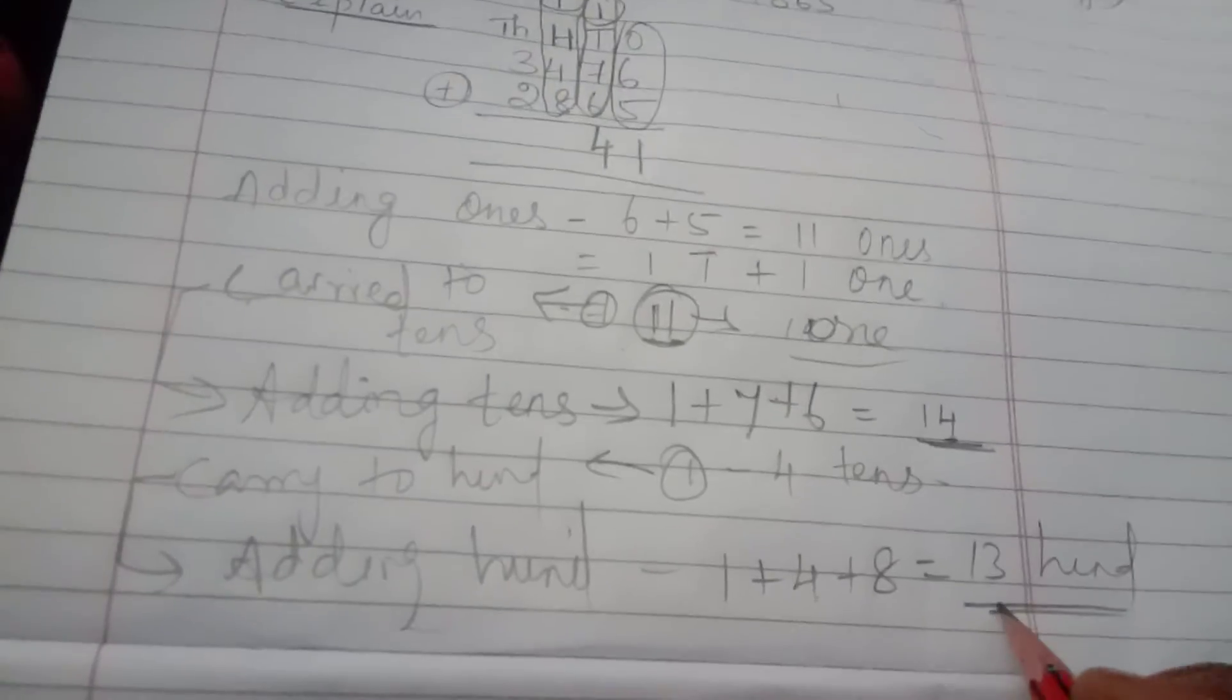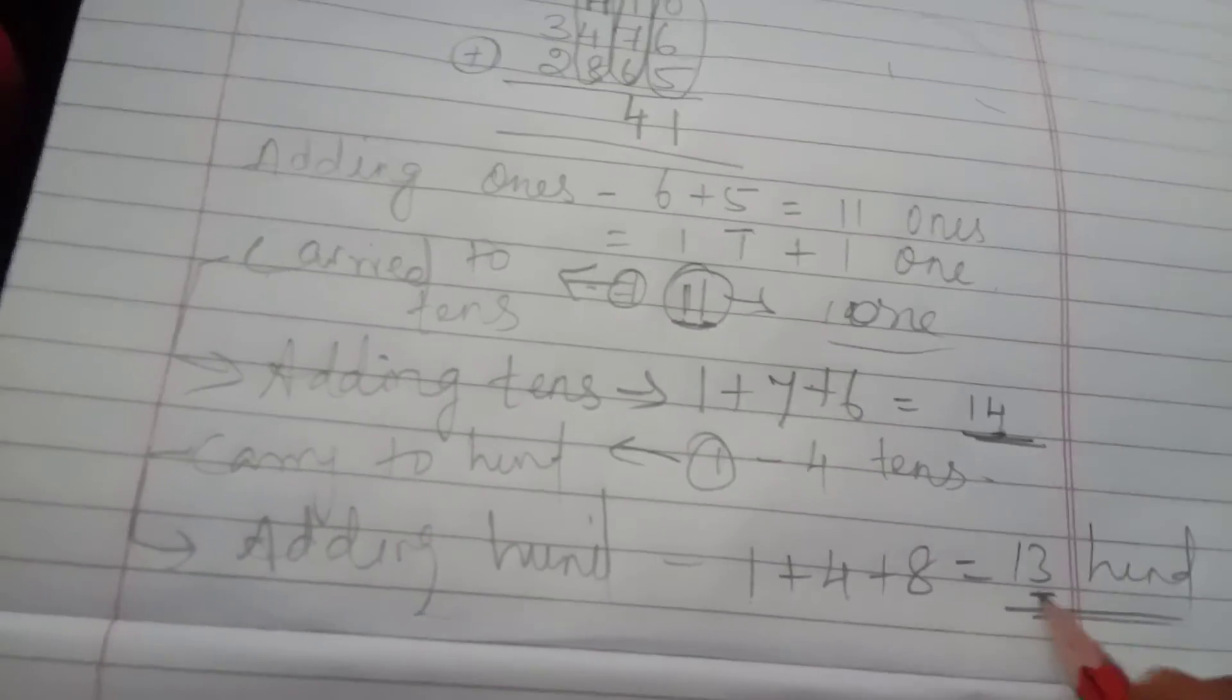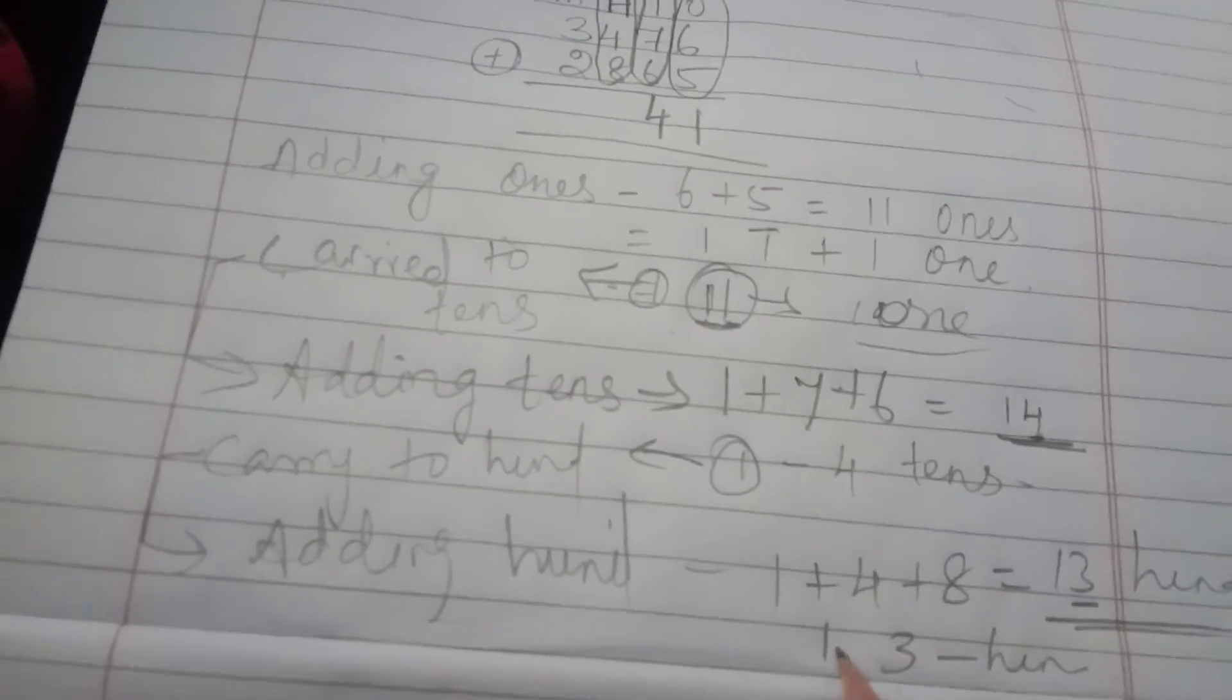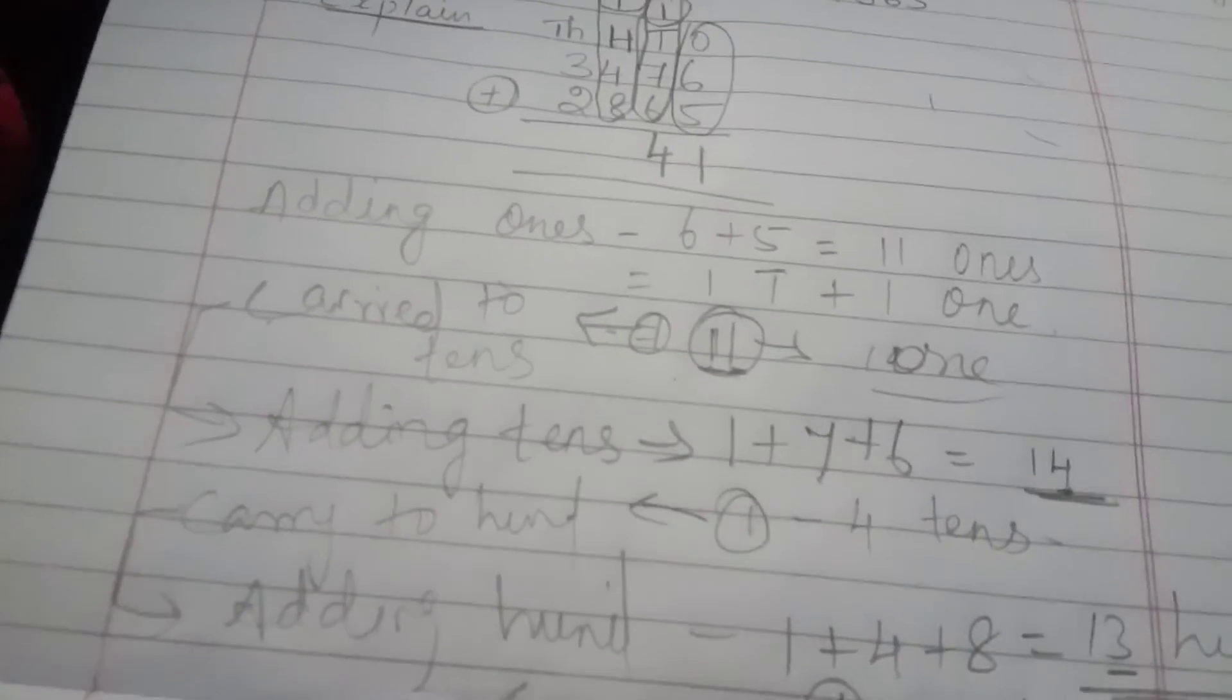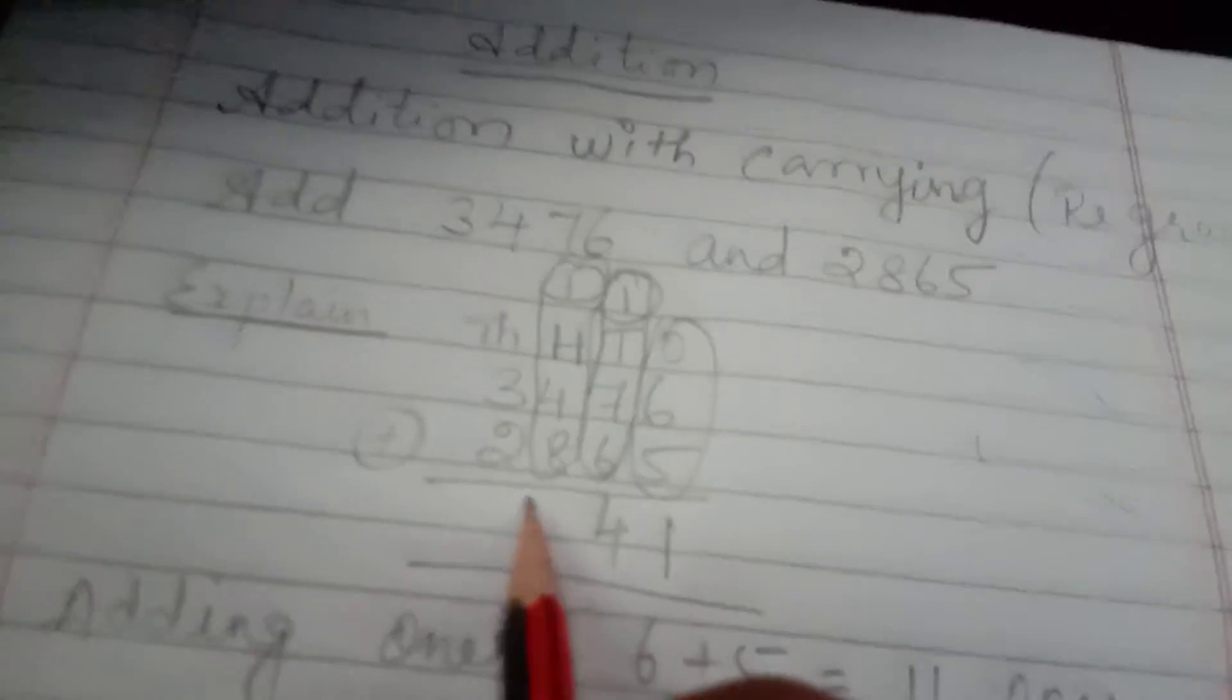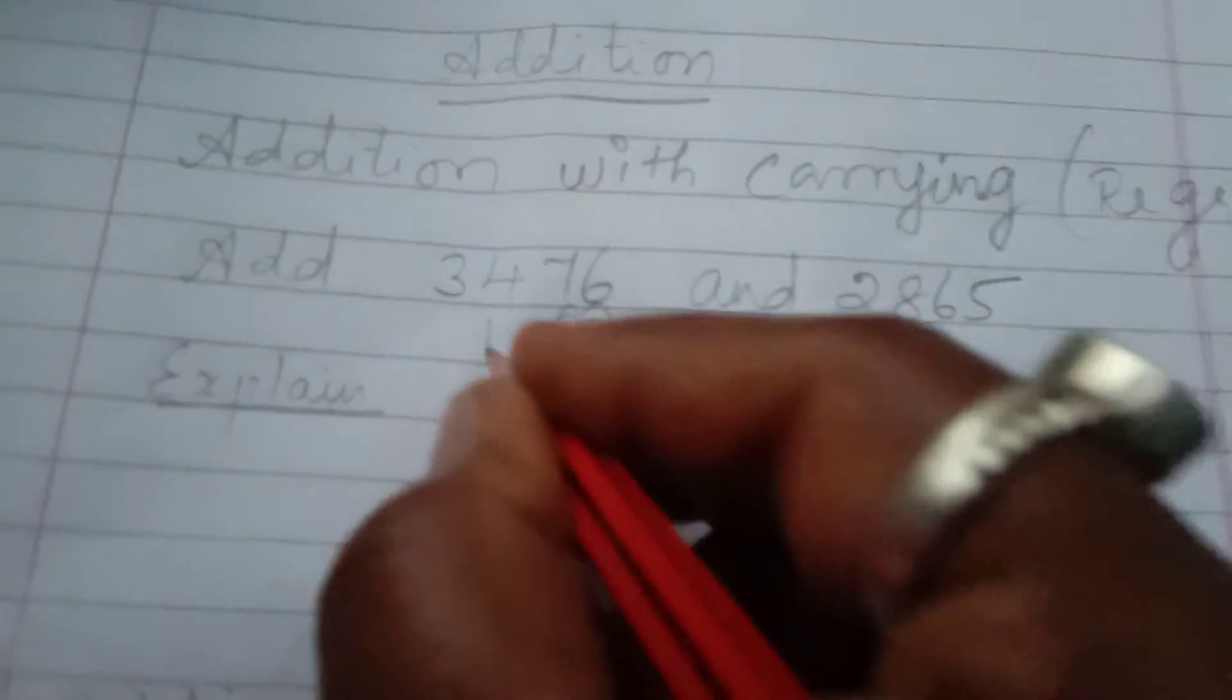13 hundreds in hundreds place. So in this, first 3 I am going to write it in hundreds and another 1 is carried. Carried to thousands. So this 3 I am going to write it in hundreds place. This 1 is carried to thousands place.